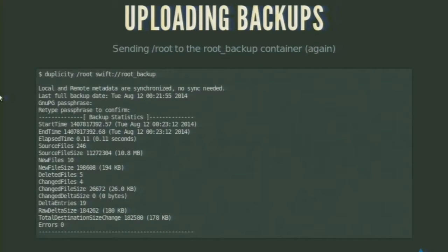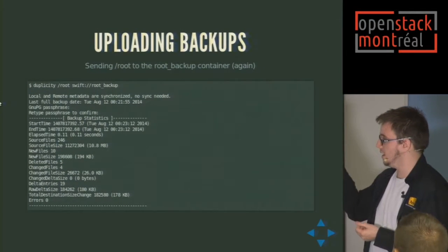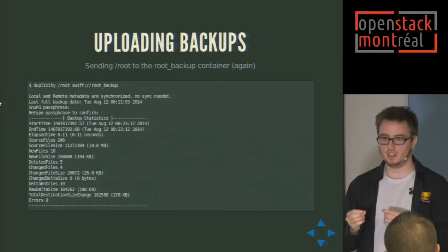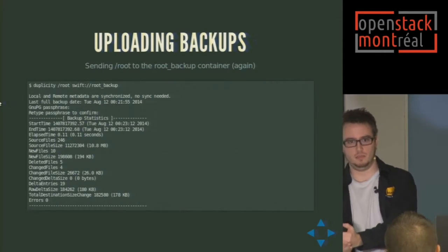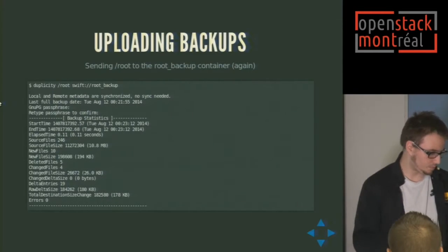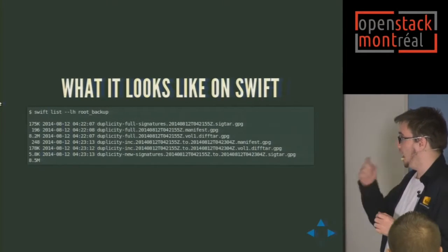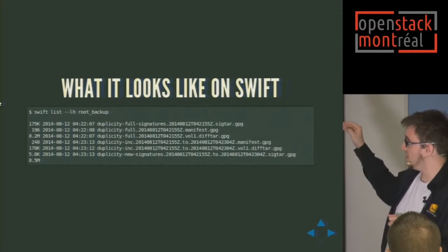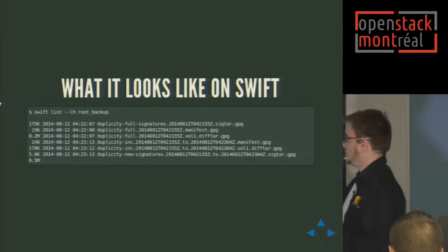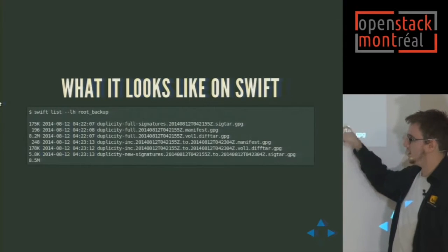If I run the backup again right away after sending it to Swift, what we see is that the raw delta size and total destination size change is really, really small. What Duplicity does is it doesn't upload all your files every time — it only uploads what changed since the last backup. Looking at Swift with the Python Swift client, everything is encrypted with GPG. You have the initial full backup at the top, and then incremental backups that are all timestamped.